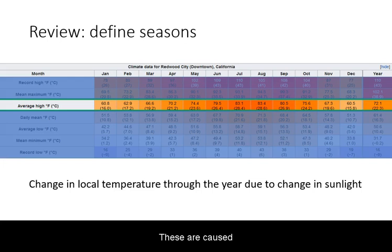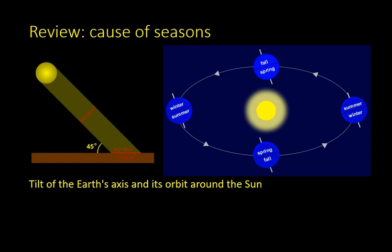These are caused by the changes in sunlight. The underlying cause of the Seasons is the tilt of the Earth's axis with respect to its orbital plane as it orbits the Sun.